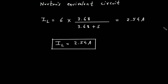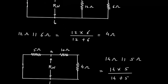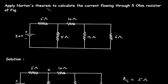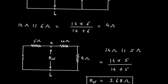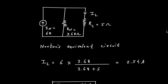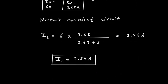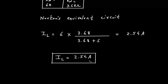We had to apply Norton's theorem to calculate the current flowing through the 5 ohm resistor. We have to find the 5 ohm resistance current. Therefore, the current through this 5 ohm resistor is 2.54 ampere. This is our final answer.